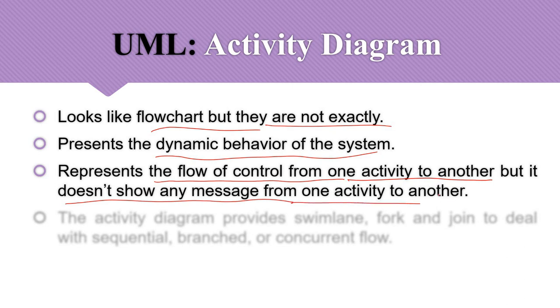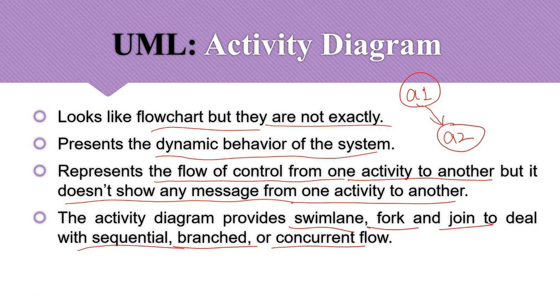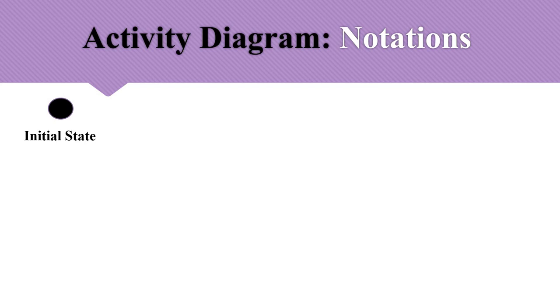Activity diagrams do not show messages passing between activities, meaning they do not represent data flow from one activity to another. They only represent the flow of control from one action to another, from one behavior to another behavior of the application. They also provide swim lanes, fork, and join nodes to deal with sequential, branched, concurrent, or alternate flows, making them useful for handling complex flows.